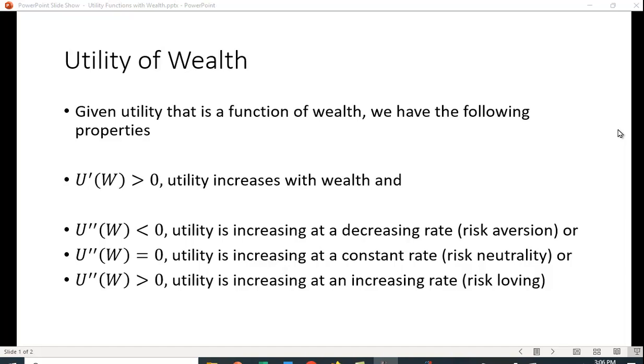The second property that we consider is what's the person's aversion to risk. If the second derivative is less than zero, we know that utility is increasing at a decreasing rate, so that person is risk-averse. If the second derivative equals zero, utility is increasing at a constant rate, and this is somebody who's risk-neutral.